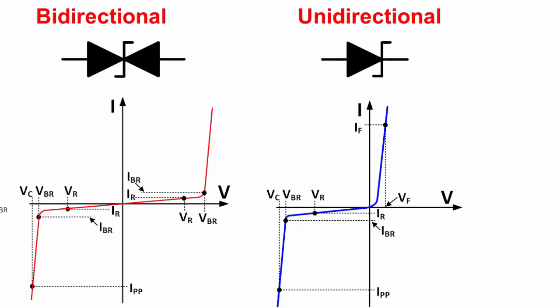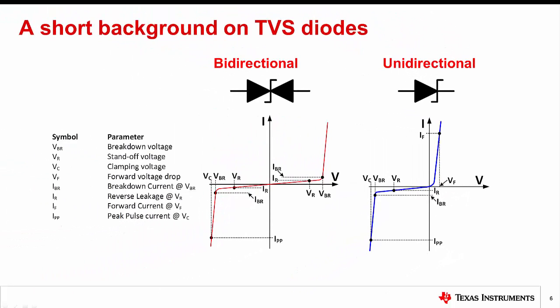Normally the TVS is selected based on the reverse standoff voltage, called VR. The reverse standoff voltage is the voltage at which the TVS diode leakage is defined. For example, if the supply voltage is set to 15 volts, a reverse standoff voltage of 15 volts is selected to assure that the diode is normally off and has low leakage during normal operating conditions. Ideally, the breakdown voltage will be lower than the absolute maximum supply rating, so that the TVS diode will turn on and protect the device in an overvoltage condition. Later, we will show an example of selecting a TVS diode.